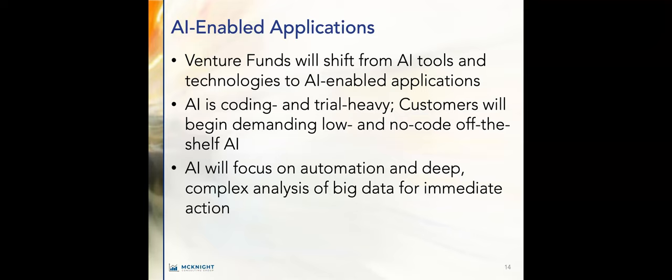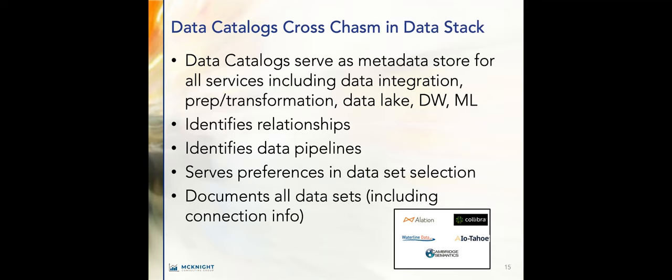Sixth trend: AI-enabled applications — not just AI tools, but AI applications. Businesses are going to expect vendors to deliver comprehensive AI-enabled solutions for line-of-business teams and departments instead of focusing solely on developer tools and technologies. We're going to see organizations shifting their investments away from generic AI toward customized solutions built with AI, focusing on automation and deep complex analysis of big data for immediate action.